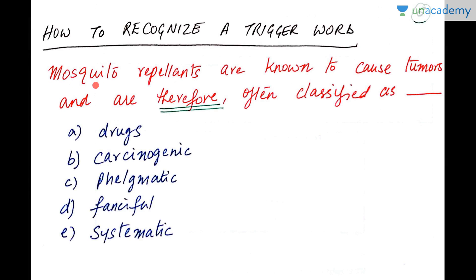Let us take another example: 'Mosquito repellents are known to cause tumors and are therefore often classified as [blank].' The choices are: drugs, carcinogenic, phlegmatic, fanciful, systematic. 'Drugs' could be a maybe since drugs can cause tumors, but it doesn't fit perfectly. 'Carcinogenic' means something that causes cancer, and since tumors are a side effect of cancer, it fits very well. 'Phlegmatic' means quiet and reserved — doesn't fit. 'Fanciful' and 'systematic' also don't fit. So we go with carcinogenic.